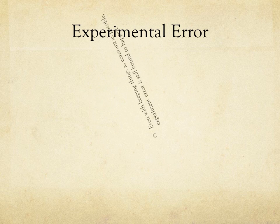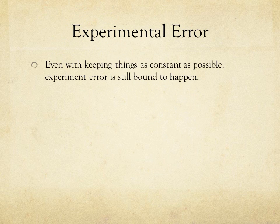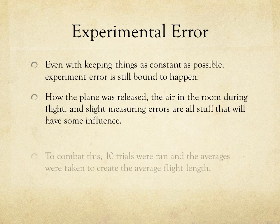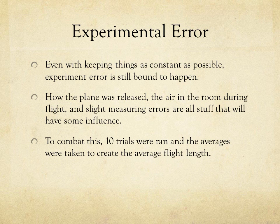Experimental error — even while keeping all the variables as constant as possible, experimental error is still bound to happen. Experimental error is influenced by the temperature of the room, how the plane was released, and all the other errors made while performing the experiment. To combat this, we made 10 trials and then took the average of each trial for the average maximum flight length.